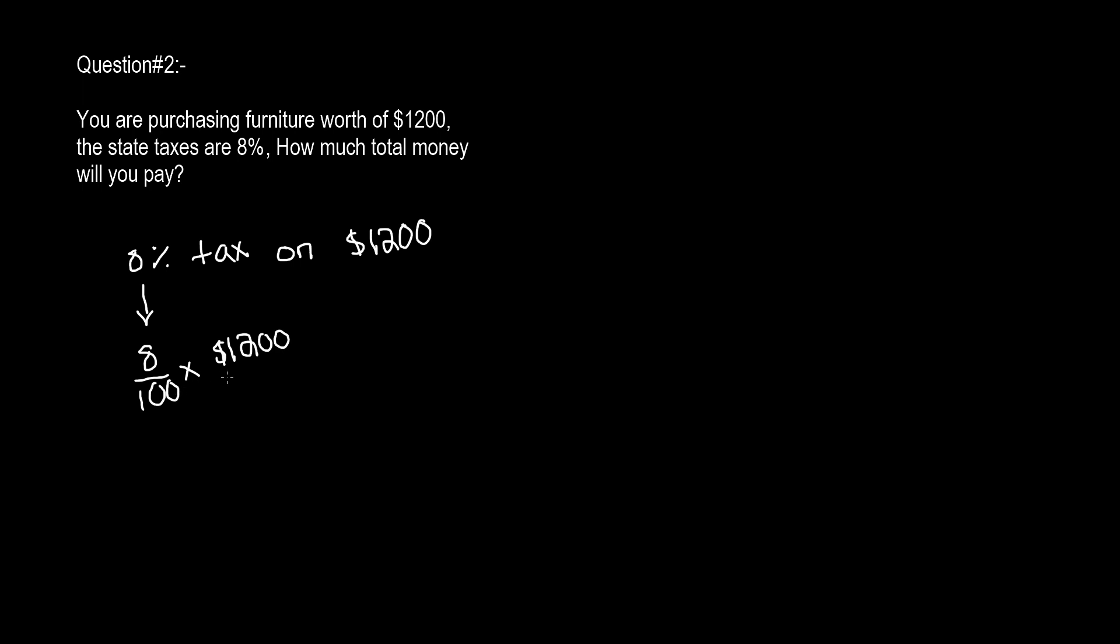Before we do this, we can always cut out these zeros to make it easier for us to multiply. So now our new problem is 8 over 1 times $12. That gives us $96 over 1, or $96. And that is $96 is the 8% tax on $1,200.